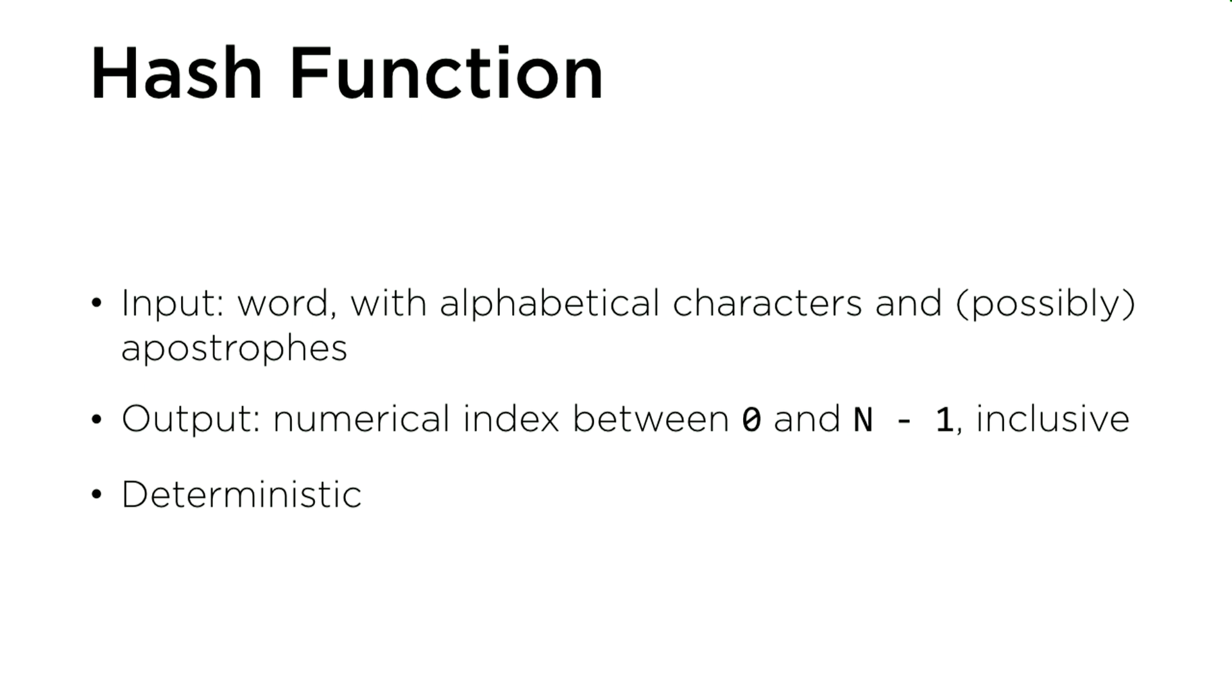And importantly, your hash function should be deterministic. If I give it the same input again and again, I should get the same output such that when I'm loading a word like apple into the dictionary, I'll be able to calculate the hash value of the word apple and insert apple into that index into the hash table. And then when I'm checking to see if the word apple is spelled correctly or not, I should be able to call the hash function on the word apple, get the same value as before, and then check only that particular linked list in the hash table to see if the word apple is there or not.